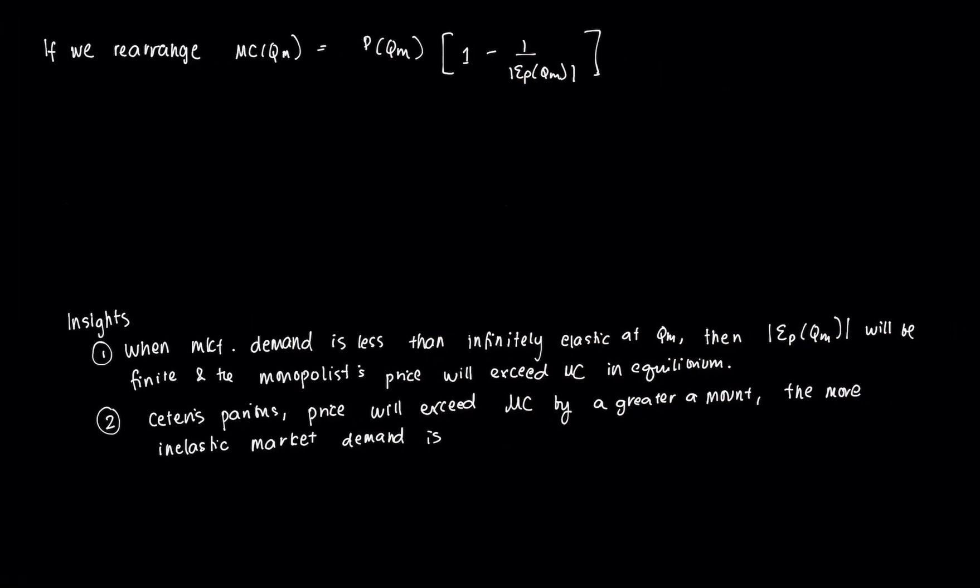If you recall, remember this form here was our form earlier for marginal revenue. So when we plug in QM in equilibrium, we know that MR is equal to MC. And we can essentially rearrange this to get an expression that's quite interesting.